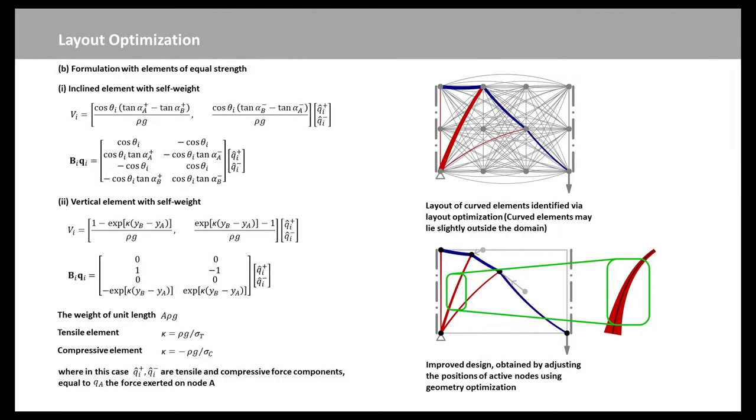However, the forms will often be complex and also difficult to realize in practice. To address this, a relatively coarse nodal discretization can instead be used to obtain a layout that can then be improved by adjusting the locations of nodes using the geometry optimization procedure.